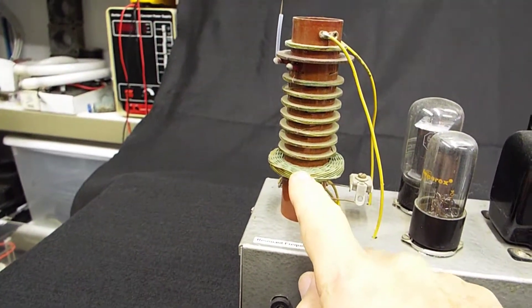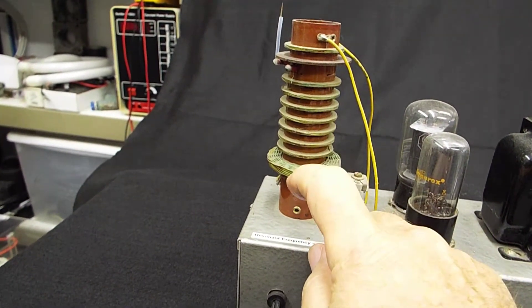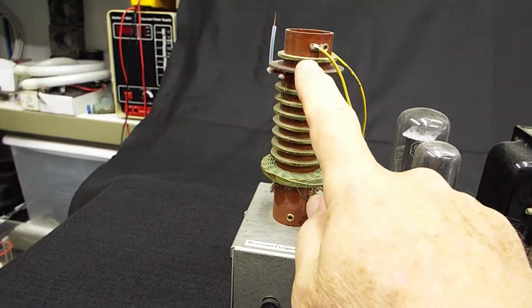Here's the primary coil. Here's the secondary coil. And here's the grid feedback coil.